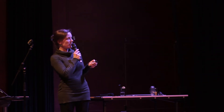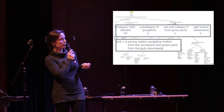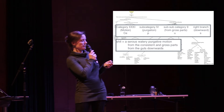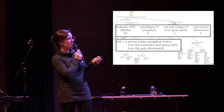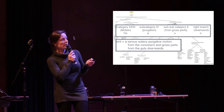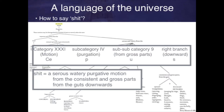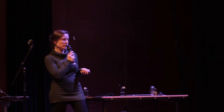So how do we say it? Basically, every category is associated with letters that make the pronunciation. For example, for shit, the word is 'sępus' — because it is in category 31 for motion, subcategory 4 for purgation, subcategory 9 from gross parts, and S the right branch. So basically, shit is a serious watery purgative motion from the consistent and gross parts from the gut downwards — in this language.